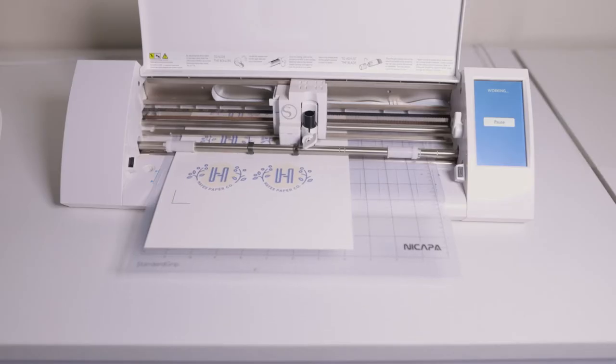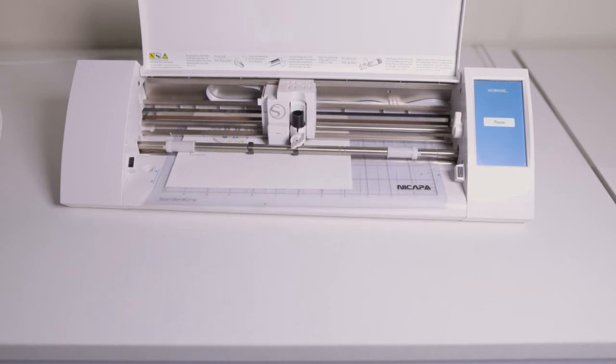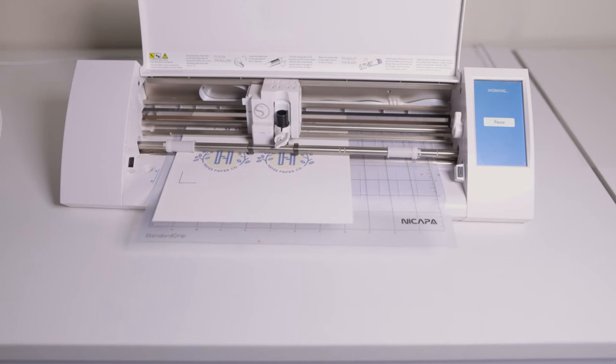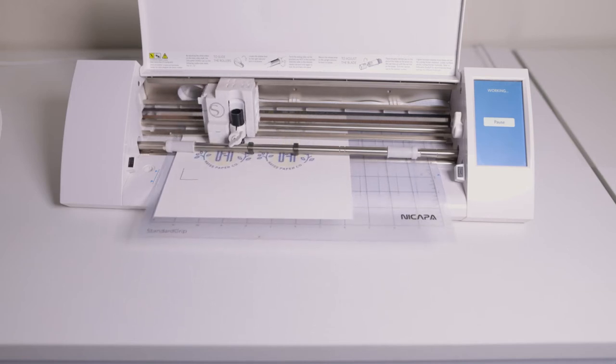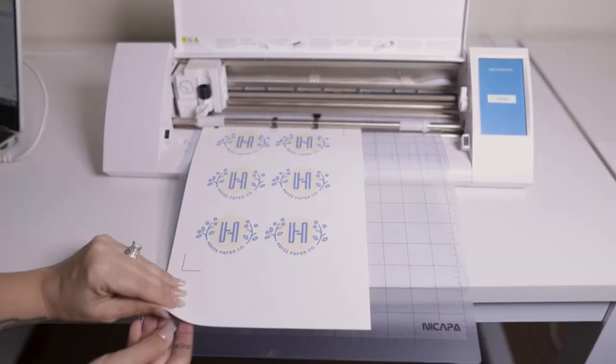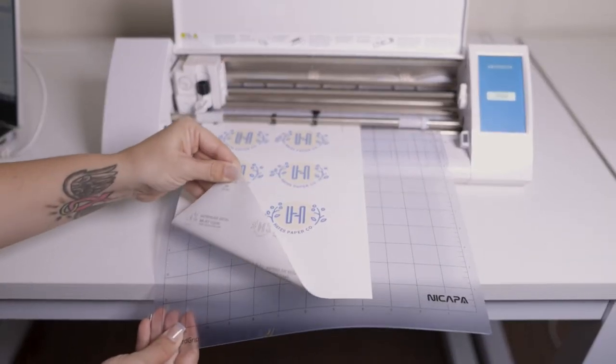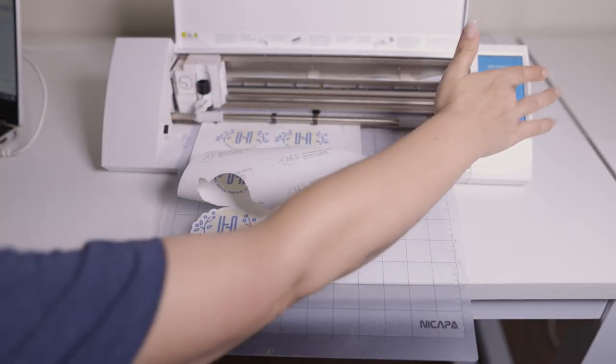You can cut your decal by hand using scissors or by using an electronic cutting machine. When cutting by hand, it is important to remember to cut close to your image, following its shape. Keep in mind that when you're using white water slide decal paper, you will see a white border if you do not cut close to the edge of the design.